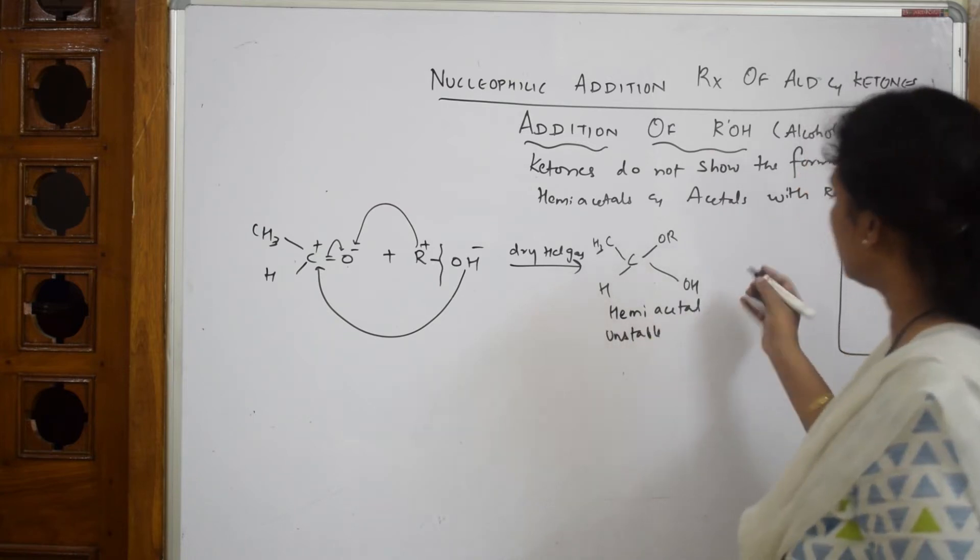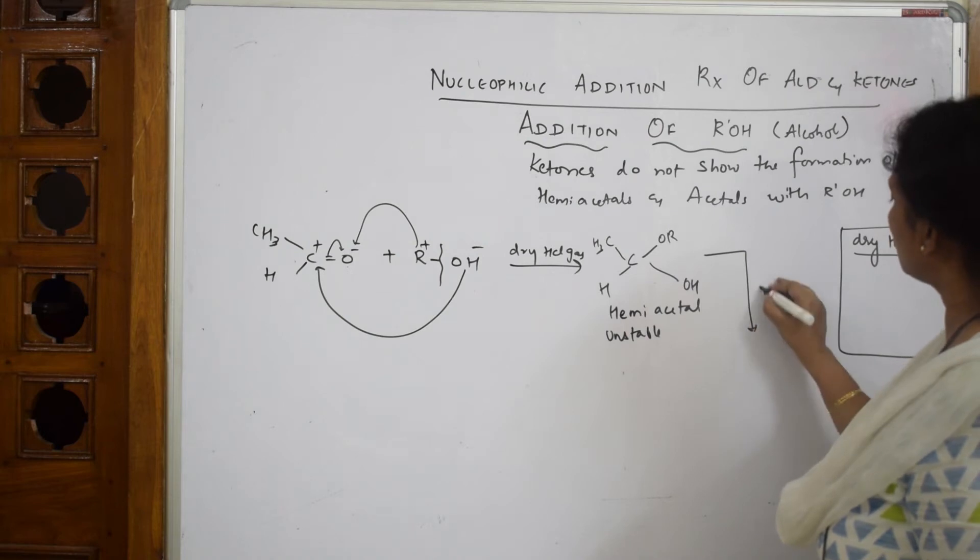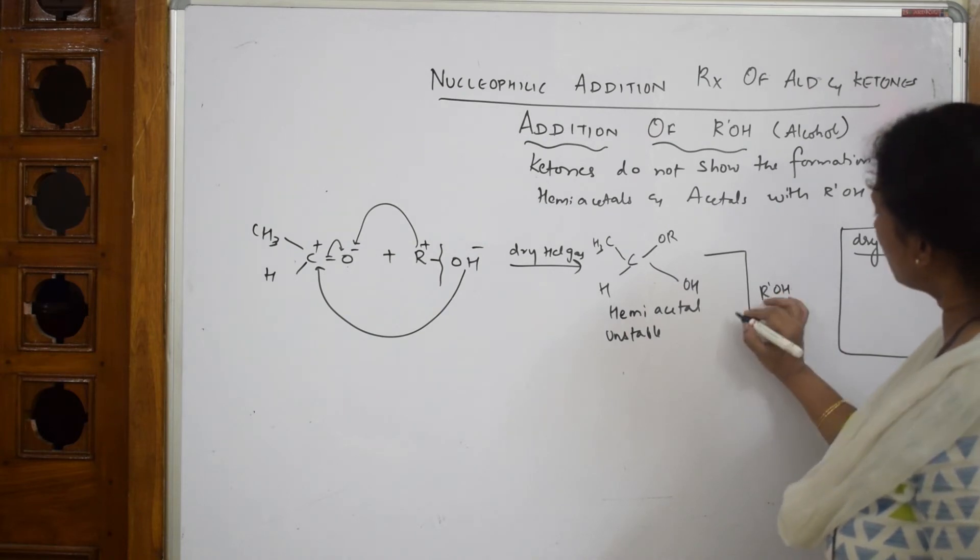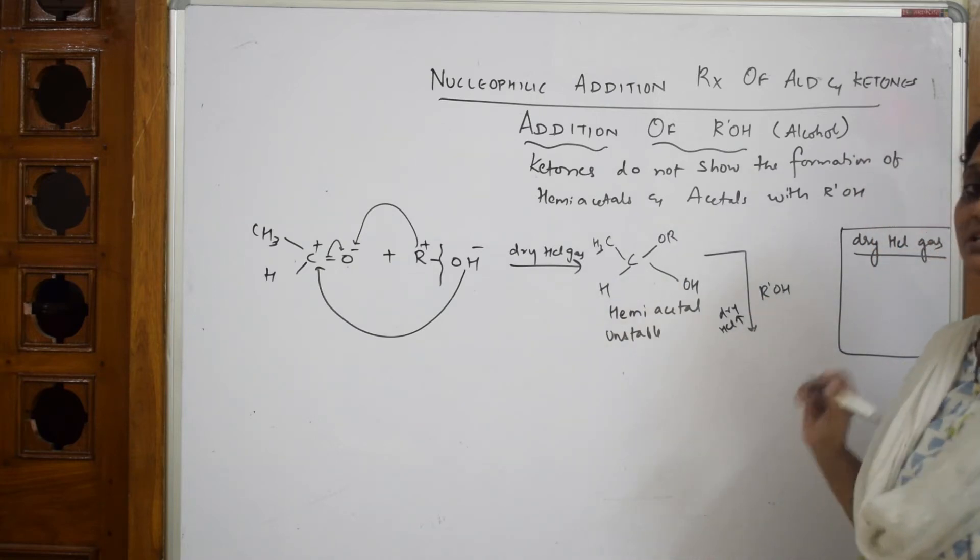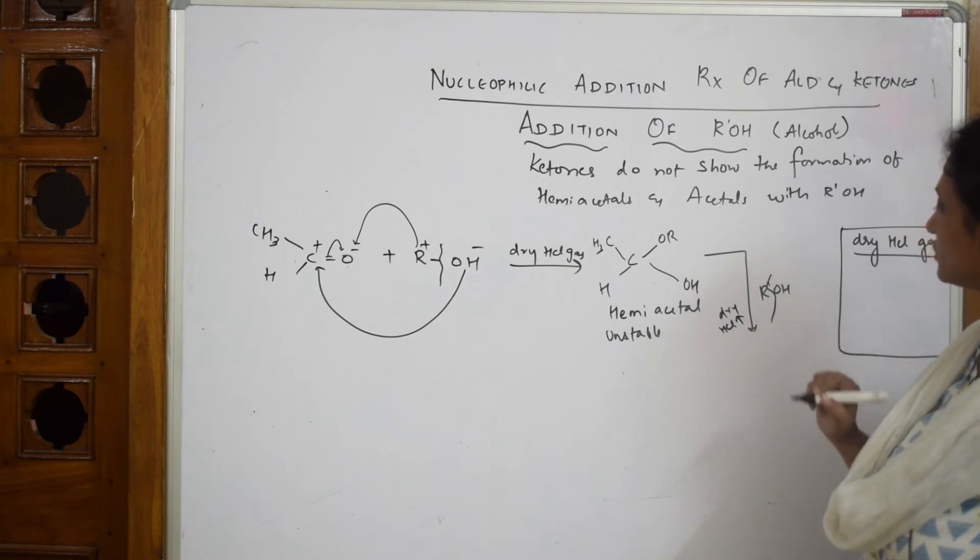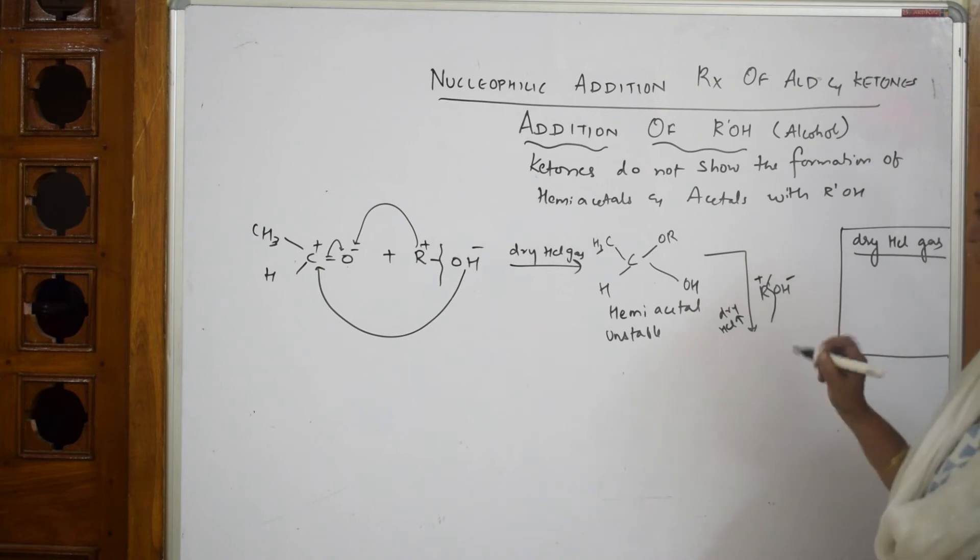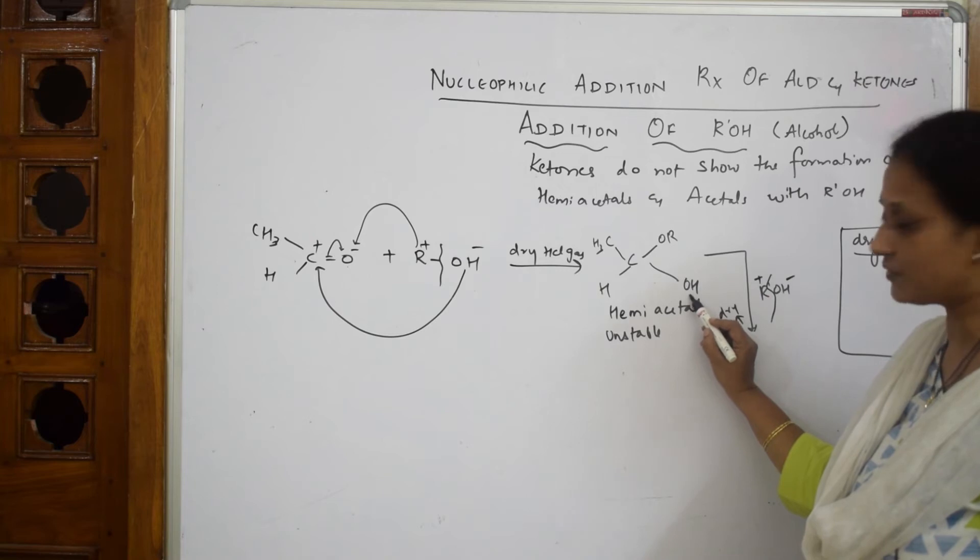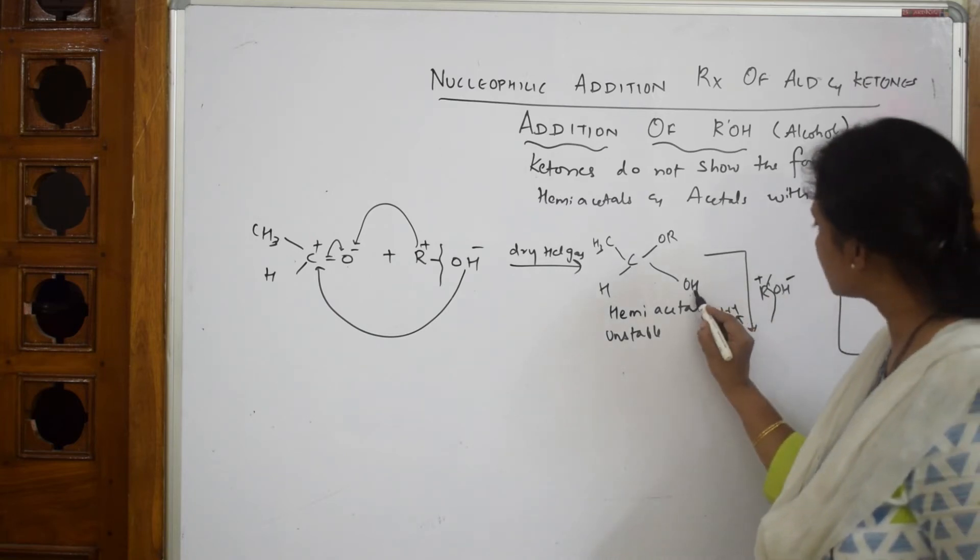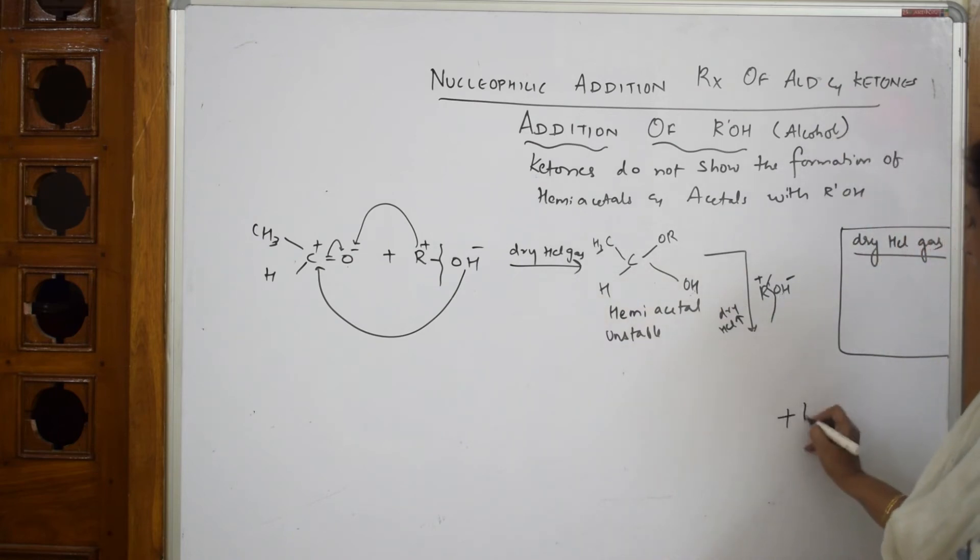So what happens? This further, you are going to introduce one more alcohol along with dry HCl gas. Remember this, very important. If you are not writing this, I will tell you the importance. Now again what happens? The bond is going to break here, minus and plus. First important thing is, this is your OH, isn't it? Your site of attack should be here. This hydrogen and this OH, this hydrogen and this OH comes out as water.